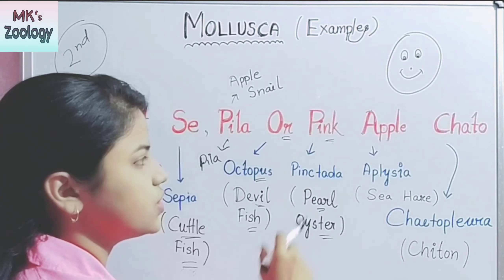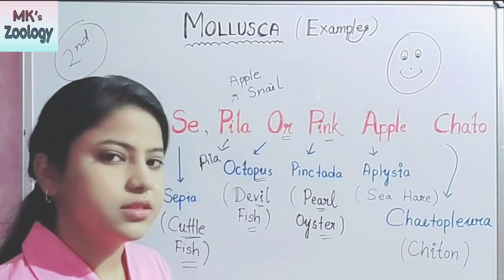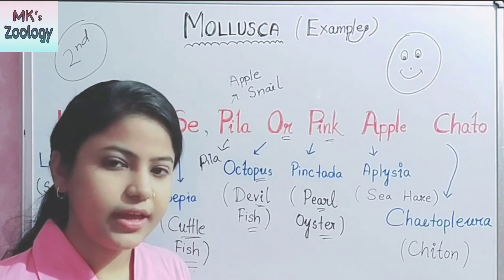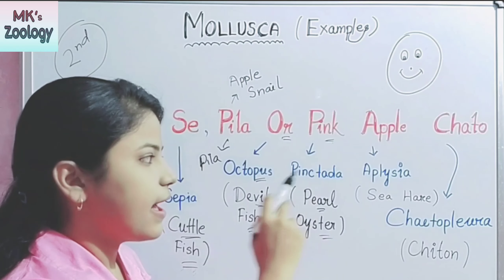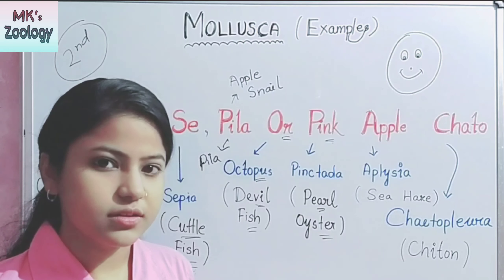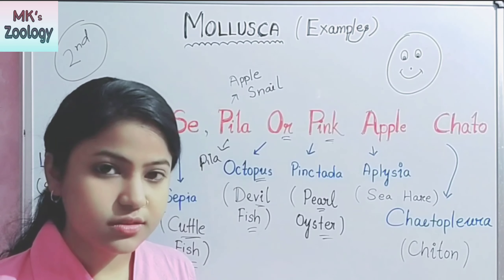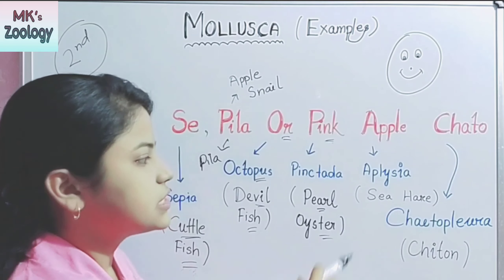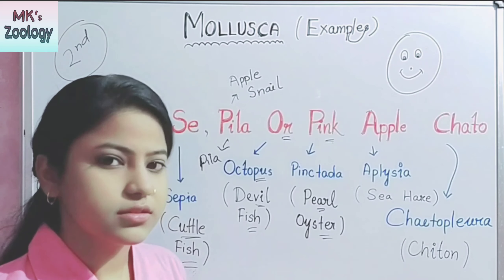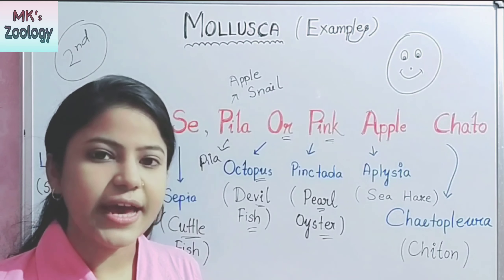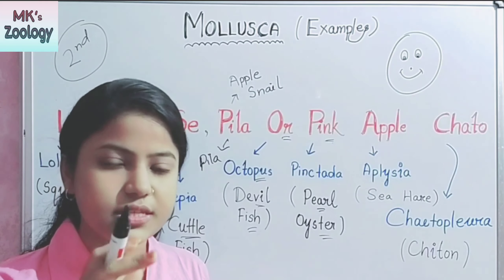The next one is "Apple", which stands for Aplysia, also known as sea hare. The diagram of Aplysia is shown on screen.